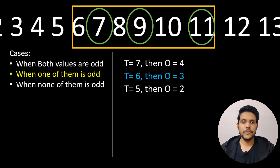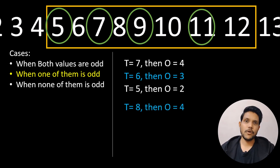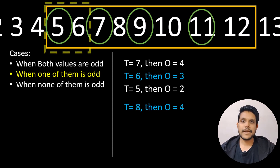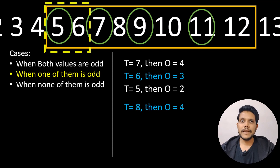One more example of this case where only one value is odd: if we stretch the window by one number from each side, the total number of values is 8 and the number of odd values is 4. So what is the logic? We know that every second number in a range is odd. A window of two values will contain one even and one odd value. As we move this window across the range, we know one value is even and one is odd.